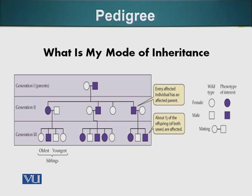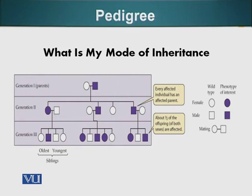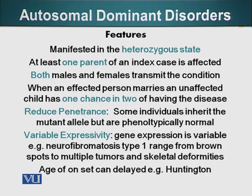The whole purpose of making a pedigree is to investigate whether a human disease is dominant or recessive. Here are the major features of autosomal dominant disorders. This type of disease can be manifested in the heterozygous state. At least one parent of an index case is affected, and both males and females can transmit the condition. When an affected person marries an unaffected person, the probability of having a child with that disease is at minimum one in two — a 50% chance.